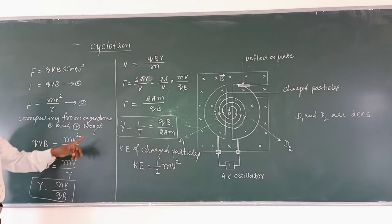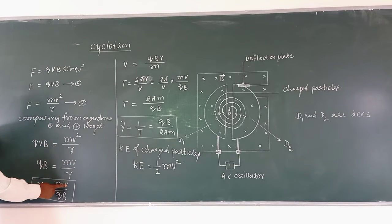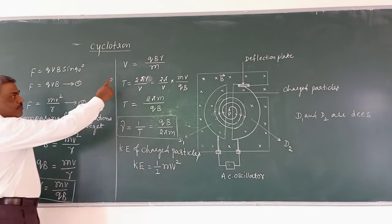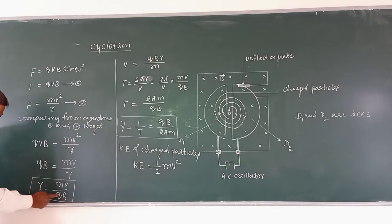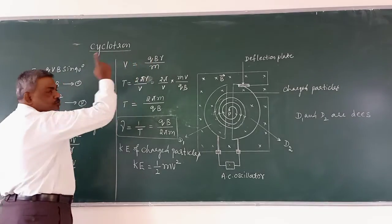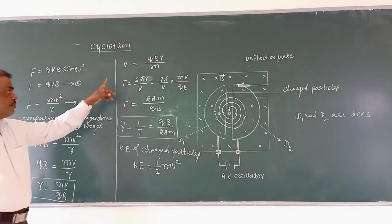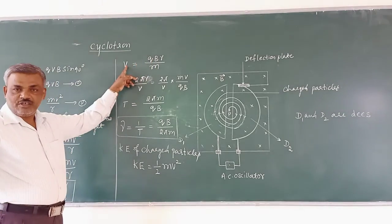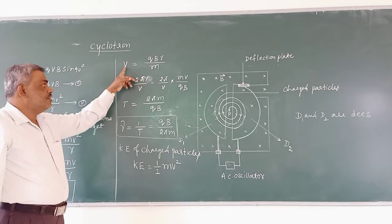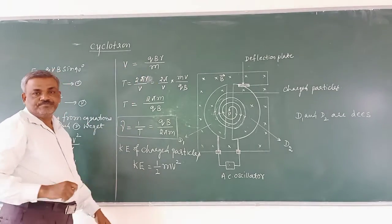The velocity of the charged particles: from R = mv/qB, we can express velocity as v = qBR/m.